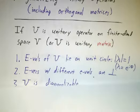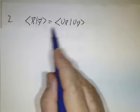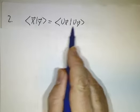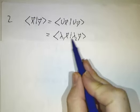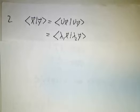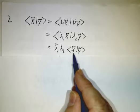Now, how about eigenvectors with different eigenvalues? Well, the inner product of x with y is the same thing as the inner product of Ux with Uy, because U preserves inner products, which is the inner product of λ1x with λ2y, which is λ1 bar times λ2 times the inner product of x with y.